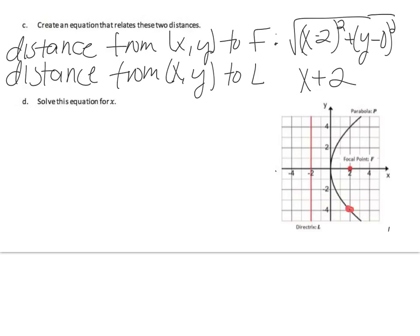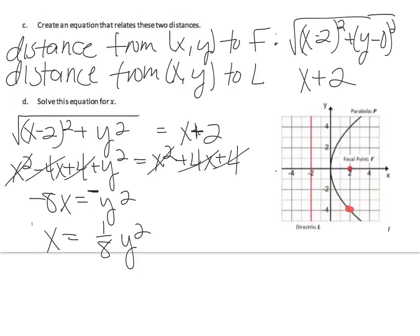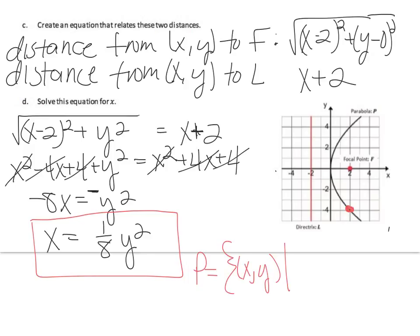Let's solve this equation for x. I have to set up the equation equal to each other first: (x minus 2) squared plus y squared equals (x plus 2). I squared both sides and solved for x. To write it in function notation, the parabola equals the set of (x, y) such that x equals 1/8 y squared.